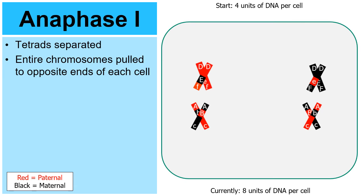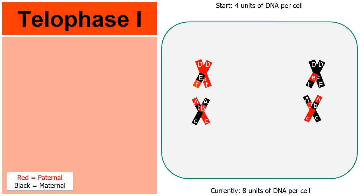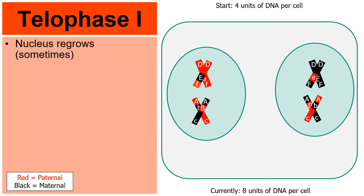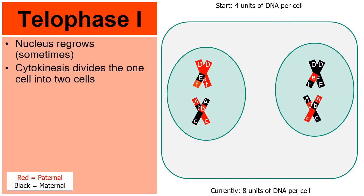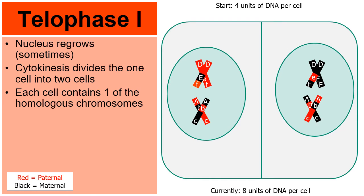In telophase I, the nucleus sometimes regroups — and you'll see in a moment why sometimes it does not. Cytokinesis divides this one cell into two cells. Each cell now contains one of the two homologous chromosomes. Currently there are four units of DNA per cell — two chromosomes in every cell, and every chromosome has two chromatids, so two chromosomes times two chromatids equals four units of DNA per cell.